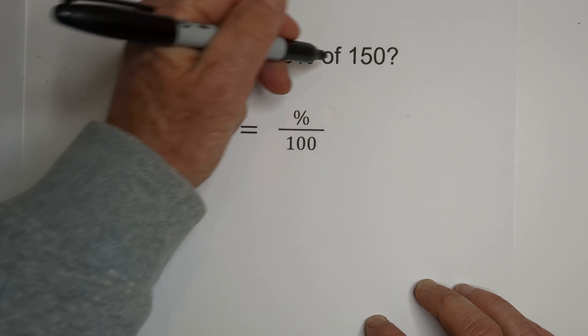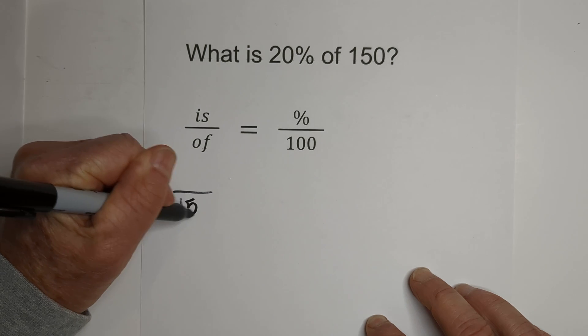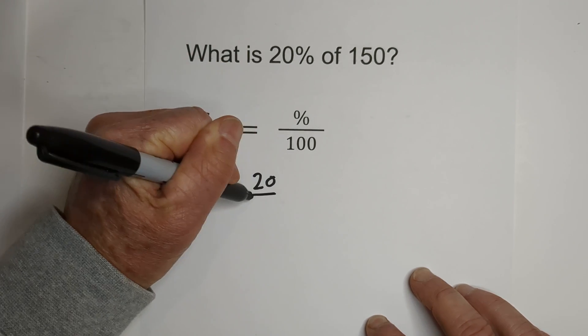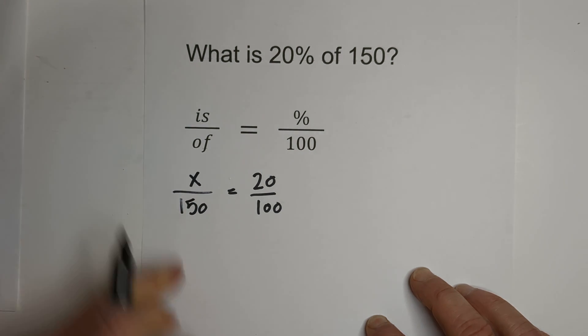We know that we have the of of 150. We know that we have the percent, so that's 20. So what we're looking for is the is.